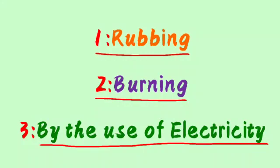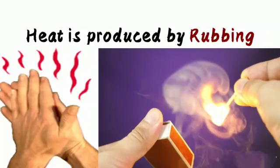Repeat after me: rubbing, burning, and by the use of electricity. So ان تینوں ways کے بارے میں ہم دیکھ لیتے ہیں۔ سب سے پہلے دیکھتے ہیں rubbing — students, rubbing کا مطلب ہوتا ہے رگڑنا۔